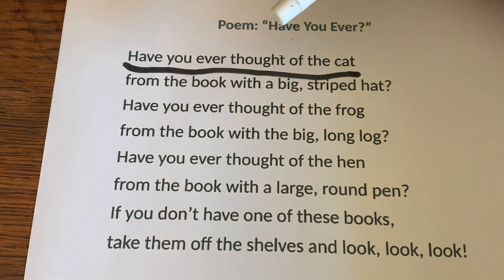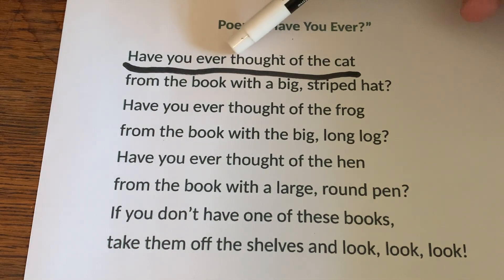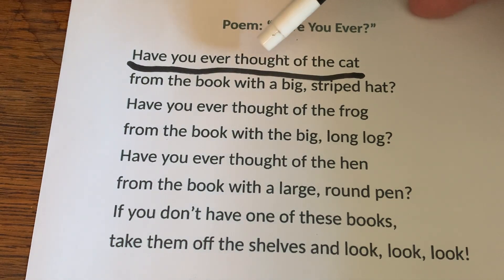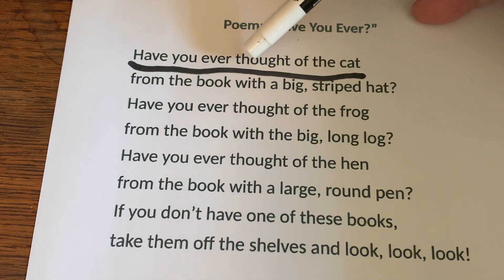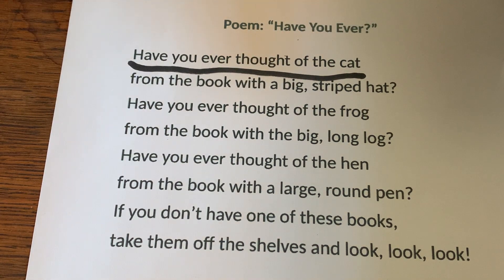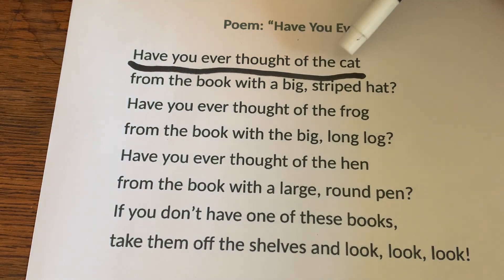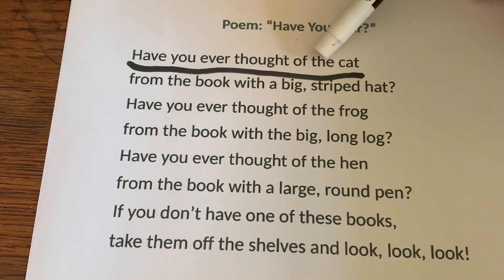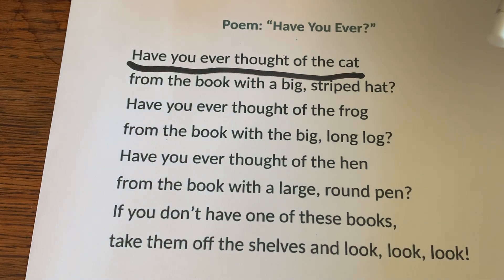Ever — does that have an O? Nope. Thought — does that have an O? It does, it's got an O right there. Of — does that have an O? Yep, O-F. The and cat — do either of those have O's? Nope, they don't. So we know that the mystery word has an O. It could be you, it could be thought, and it could be of.